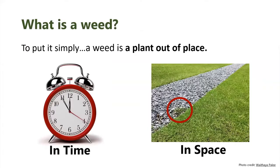So to start, let's talk about what is a weed? A weed simply is a plant out of place. I joke that one of the reasons I chose weed science is I'll always have a job — as long as there are humans, there will be weeds. It can be out of place in time: for example, if you planted beans last year and this year you planted tomatoes, a bean plant coming up in your tomato field would be considered a weed.